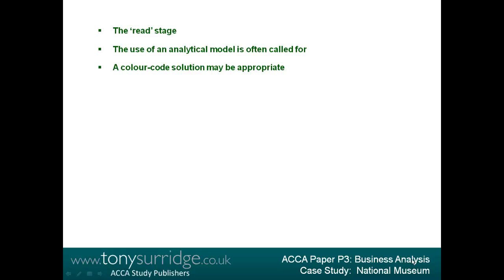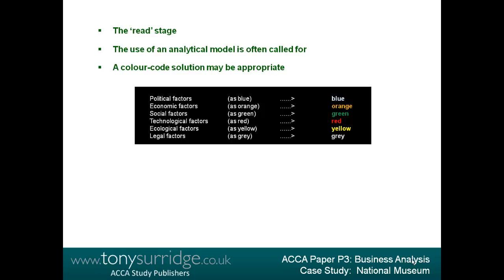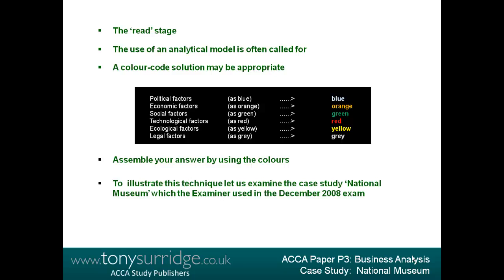One solution to the 'how' problem is to read the case study once only and to use different highlighter pens to color-code sentences on the question paper as you read. In the case of PESTEL analysis, you may choose: political factors — blue; economic factors — orange; social factors — green; technological factors — red; ecological factors — yellow; legal factors — grey using a pencil. Use the color coding system during your 15 minutes reading time and then assemble your answer quickly under the six subheadings by picking out the colors. The best technique is to read the question set first, then while reading the full scenario you know what is expected.